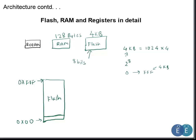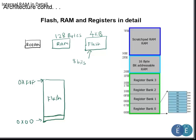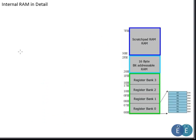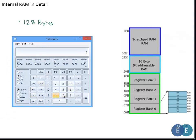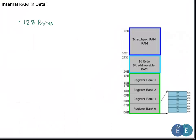Now let's look at the RAM available on the microcontroller. The internal RAM is 128 bytes. To verify the addresses: 128 in hex is 0x80, so starting from 0 it ends at 0x7F. The RAM map starts at 0x00 and ends at 0x7F — that is the 128 bytes of internal RAM.